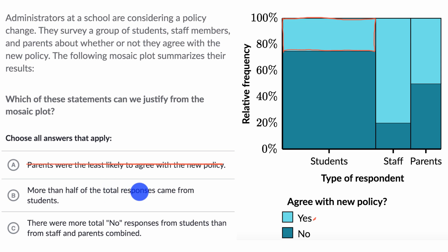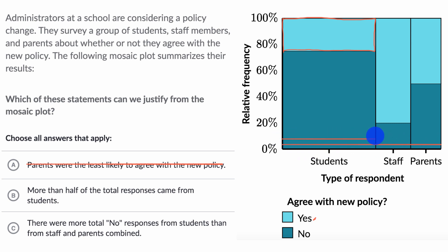Next: more than half of the total responses came from students. That does look like the case, because if you view the entire width as the total responses, the student width is more than half of it — it looks like about 50-something percent or even 60%. So I like this choice.